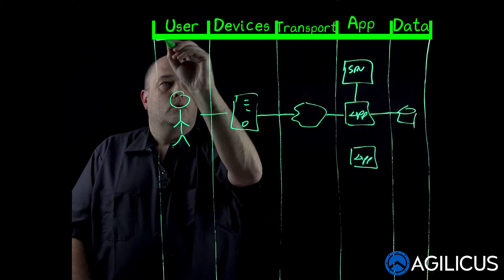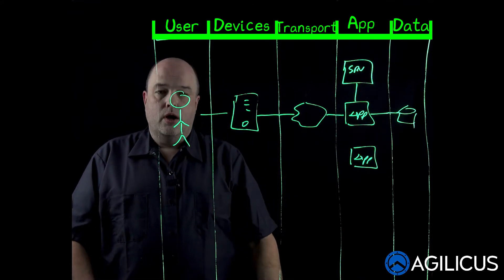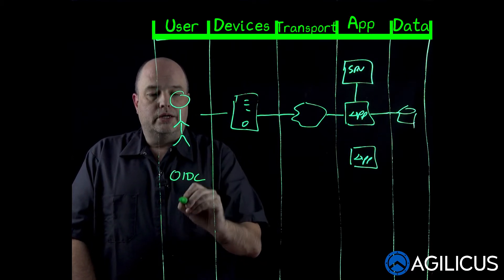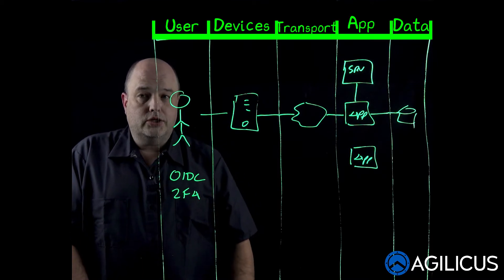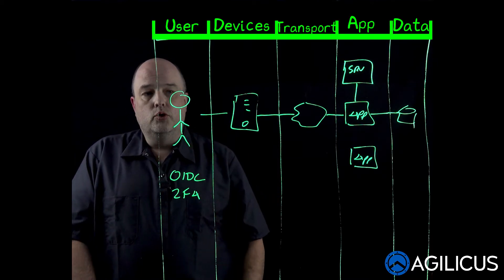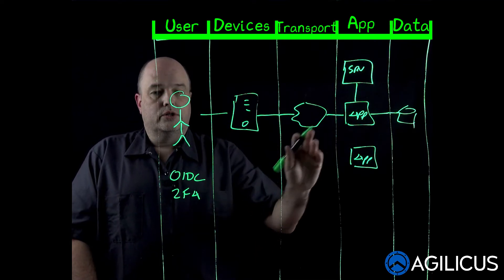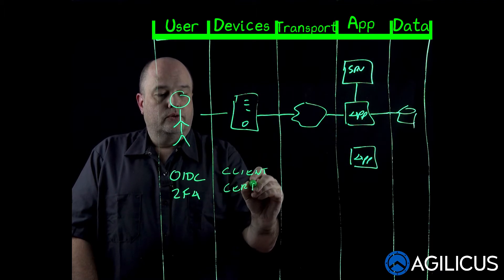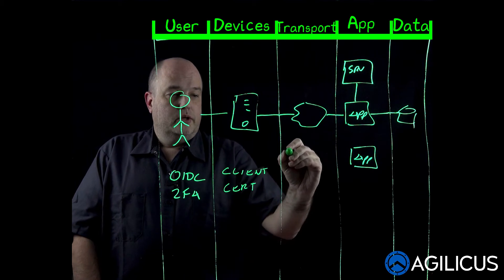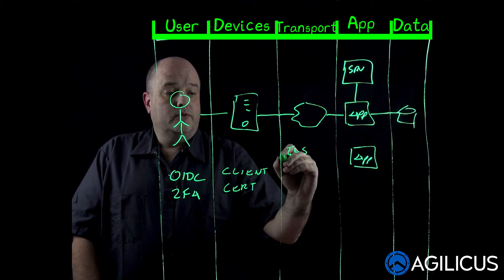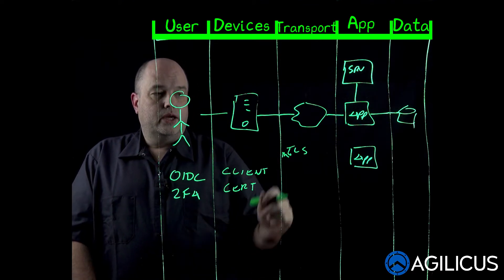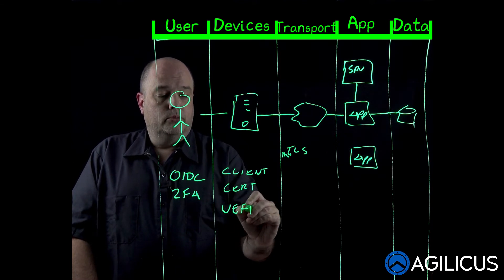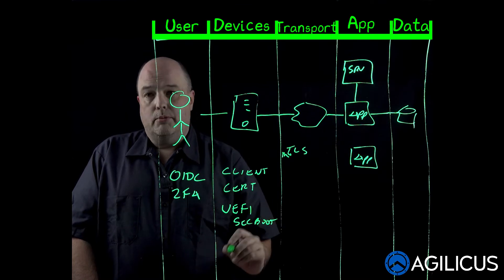These swim lanes — we think about each one needing to prove in both directions that it's trustworthy. It has to be mutual. Here we use technologies like OpenID Connect and two-factor authentication, in order for you to prove who you are to the device and onwards to the network. The device might use a client certificate to prove who it is. In order for the device to be trustworthy, it might use technologies like UEFI secure boot, or maybe a fully encrypted hard disk.